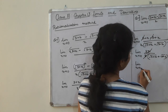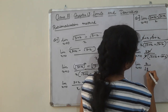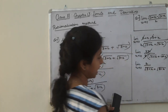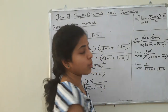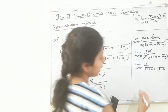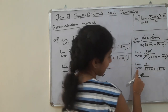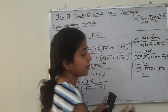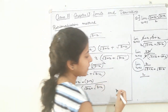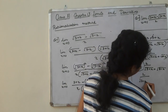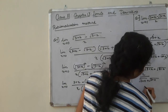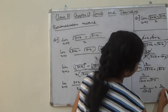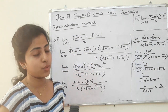Limit: 2 divided by [root(3 + x) plus root(3 − x)]. This gives 2 divided by root 3 plus root 3, which is equal to 2 divided by 2 root 3, which equals 1 over root 3.